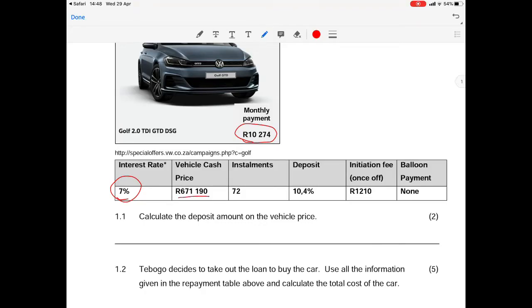It comes about with an interest rate of 7%. The cash price of the vehicle is R671,190. There are 72 installments. He needs to make a deposit of 10.4% of the cash price and there is an initiation fee which is a once-off fee of R1,210 and there is no balloon payment.